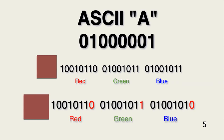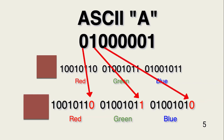A steganography algorithm inserts data into a graphic by replacing the least significant digit in each pixel byte with a bit from a character bit, as shown. Note that the pixel color does not noticeably change. This is why it's possible to hide information without anyone detecting it.